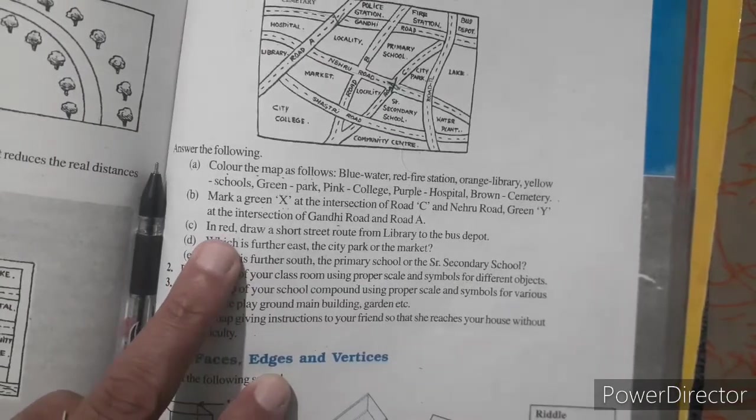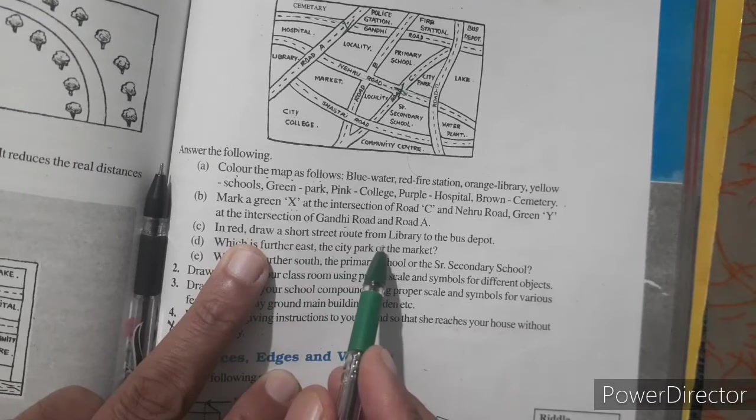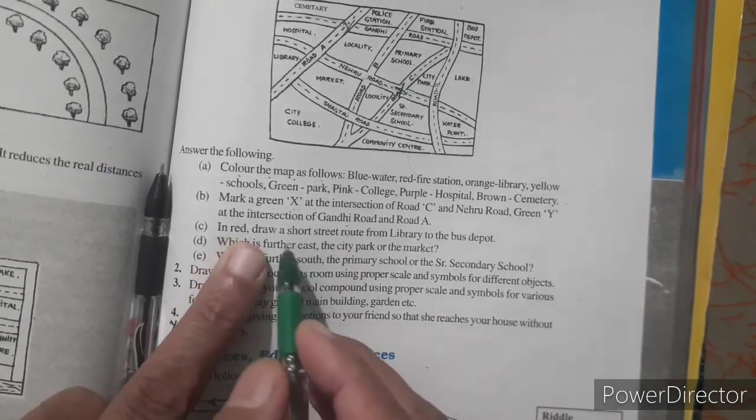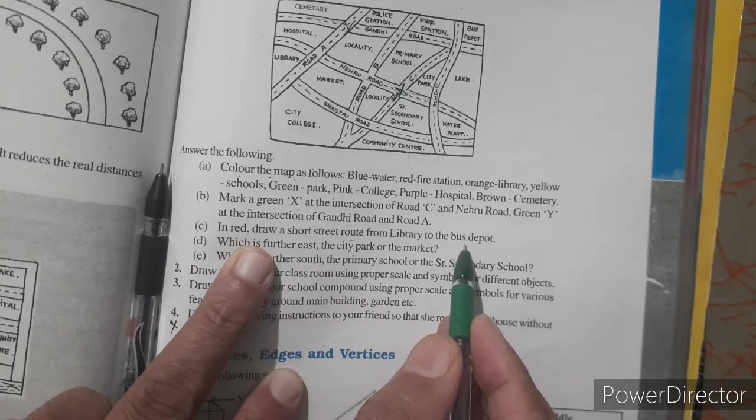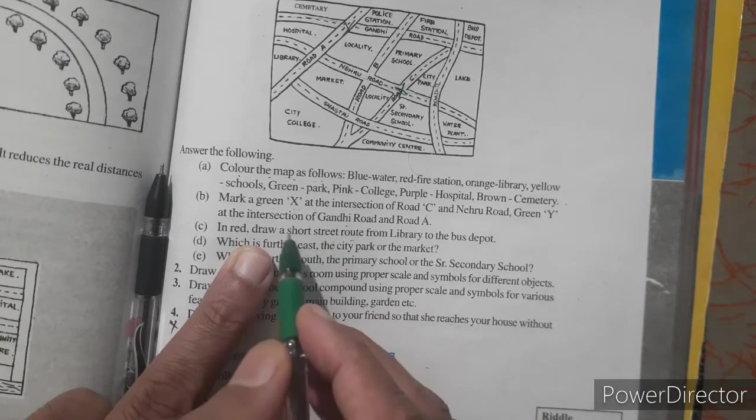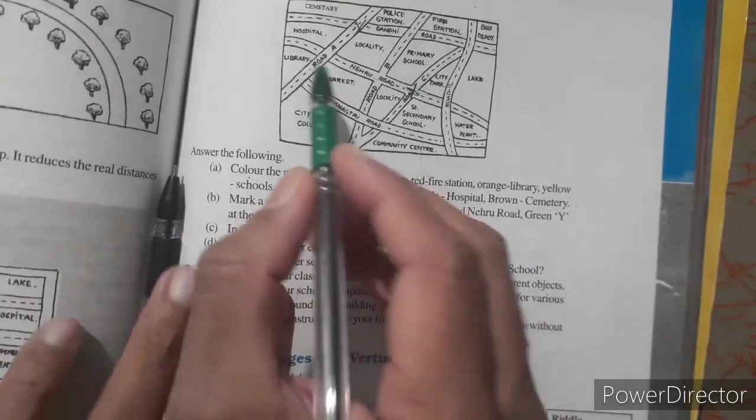Now in red, draw a short street route from library to bus depot. Means you just represent the route library to bus station which is the shorter one, short route with red color. Here, look, here's the library and here's bus depot.